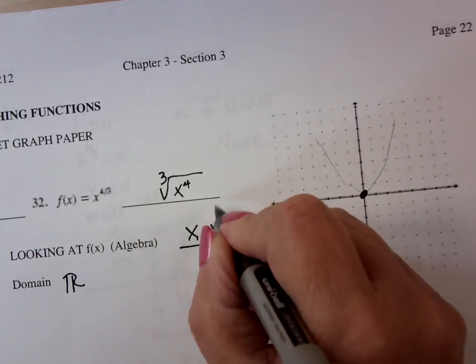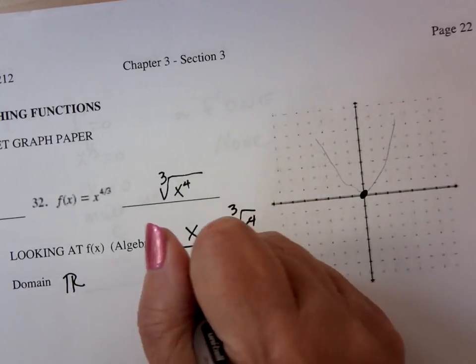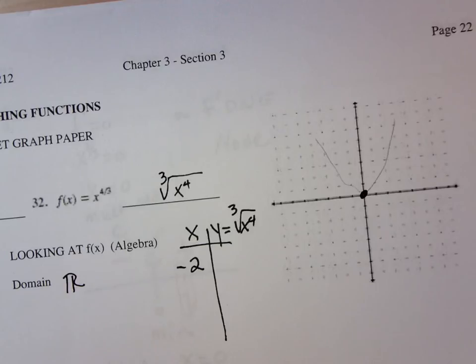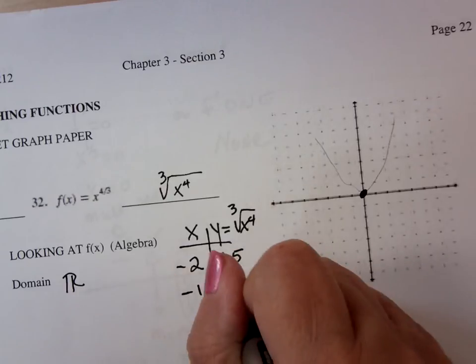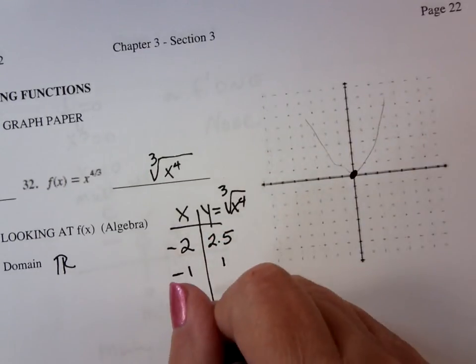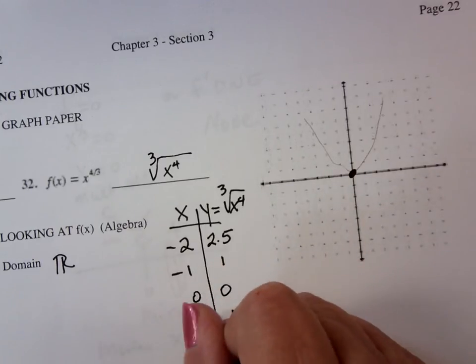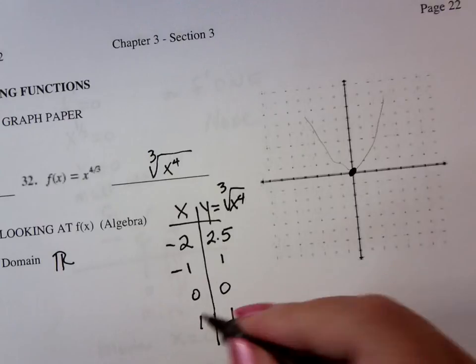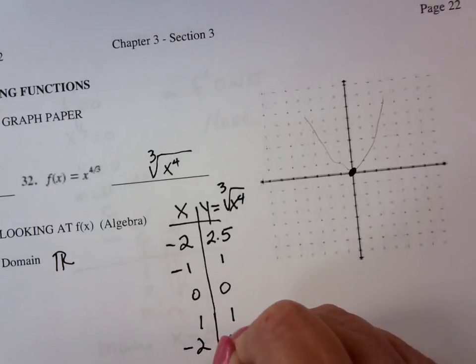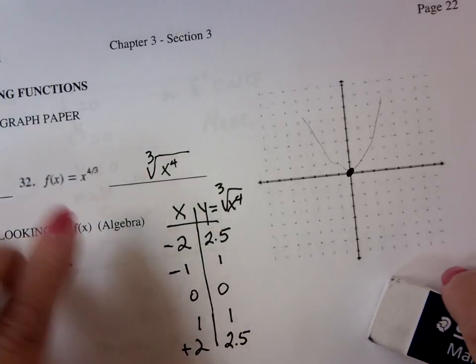So this is going to be the cube root of x to the fourth. And with my handy dandy little calculator, if I put in negative two I get 2.5. If I put in negative one I get one. If I put in one I get one, and that's because I'm taking x and raising it to the fourth power, so it's going to be symmetric. And if I put in negative two I get 2.5, if I put in positive two I get 2.5.